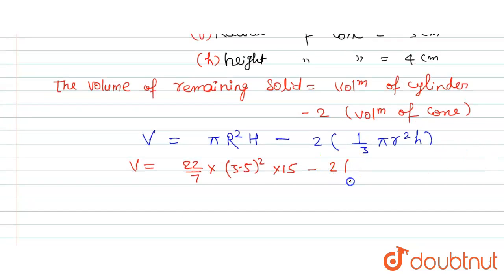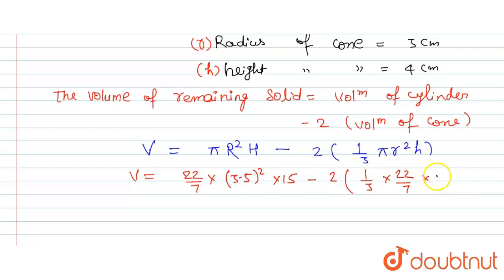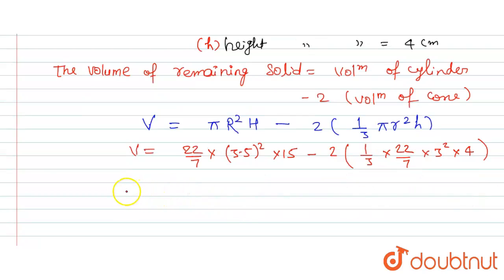2 times 1/3 π, 22/7, and radius here is 3, so 3 squared times height 4 centimeters. Further we will simplify, so this can be written as